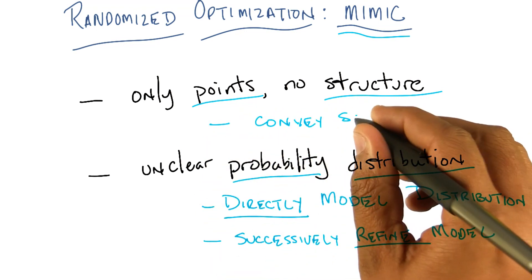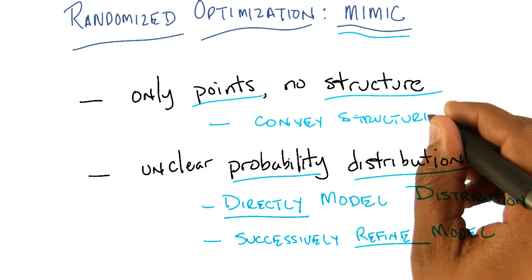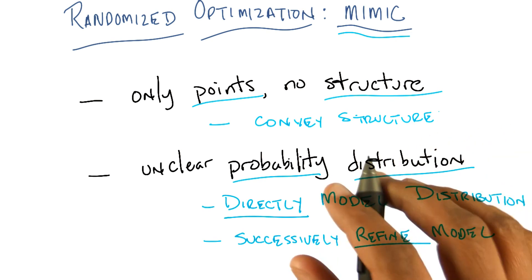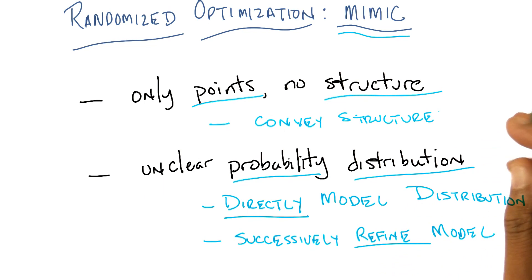Structure in particular of what we're learning about the search space while we're doing the search. Exactly. And not just simply the structure of the search space, but the structure of the parts of the space that represent good points or points that are more optimal than others. Yeah, that seems like a really useful thing.